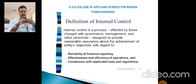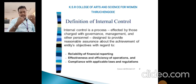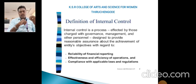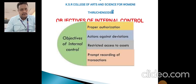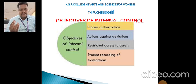Internal controls help management to know about the actual financial position of the company. Auditing is conducted by an external auditor, but in internal control, employees within the same company — whoever is eligible to perform the checking process — have to verify the documents. That is called internal control.